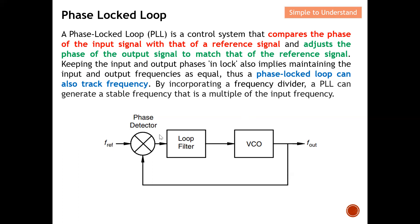At the output of the phase detector, they determine how much phase difference exists between the reference and the input — indicating how large the key difference is. Keeping the input and output phase in lock also implies maintaining the input and output frequency as equal. So when we keep them in lock in terms of phase, we also indirectly keep track of frequency. When they are in phase lock, the frequency should also be the same.